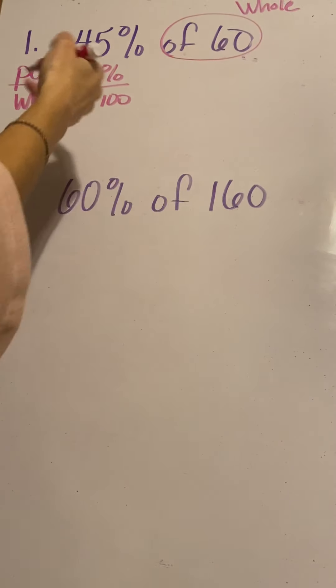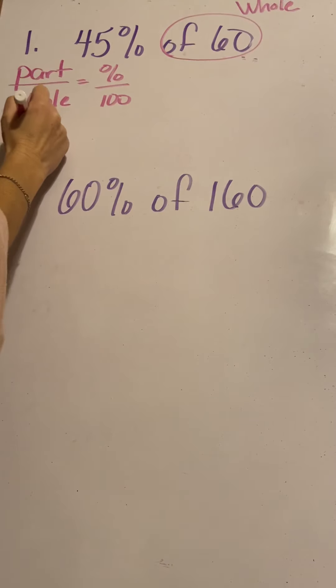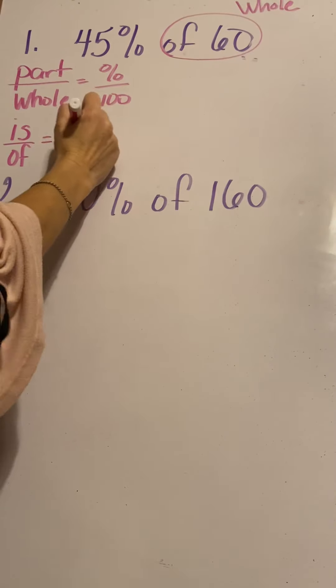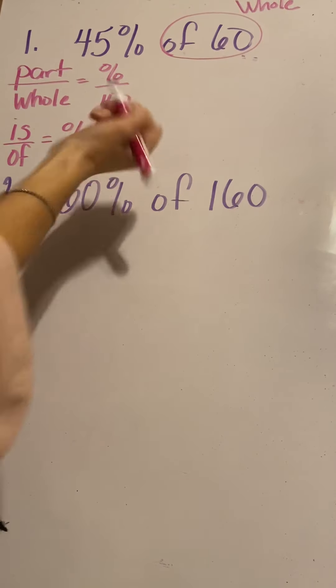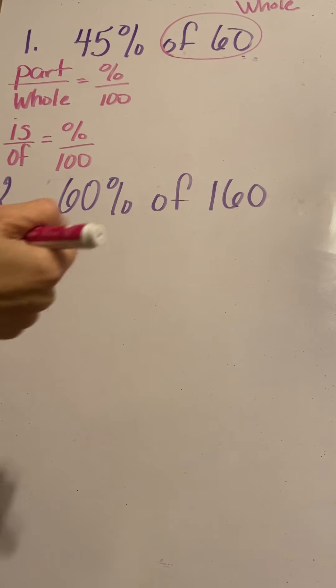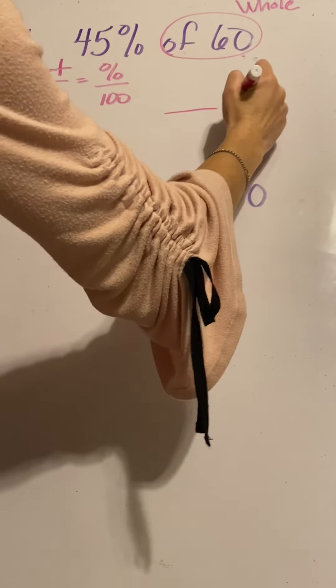Another way you could look at it, I know years ago when I was in school, we did is over of equals percent out of 100. So the of, or of 60, that's your whole. That's your whole group. So we make a proportion.